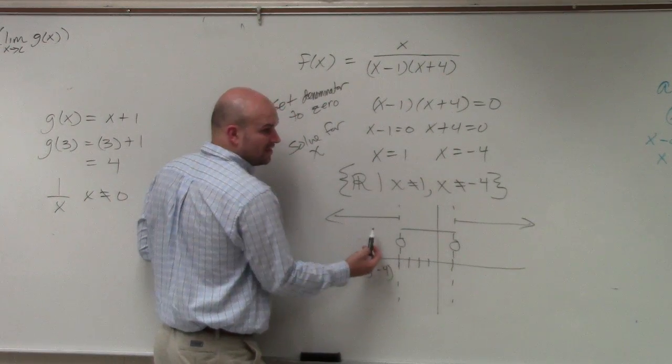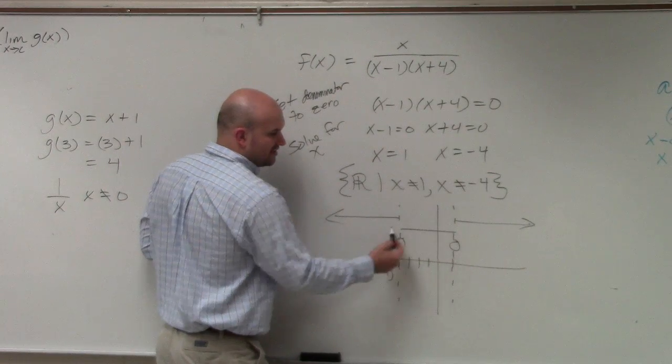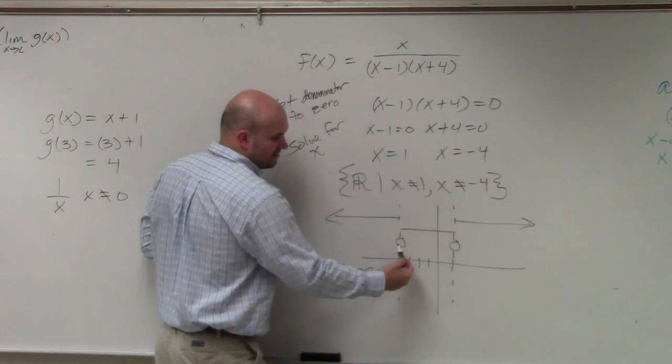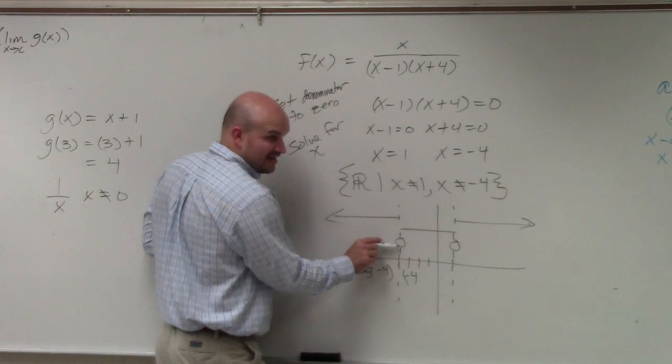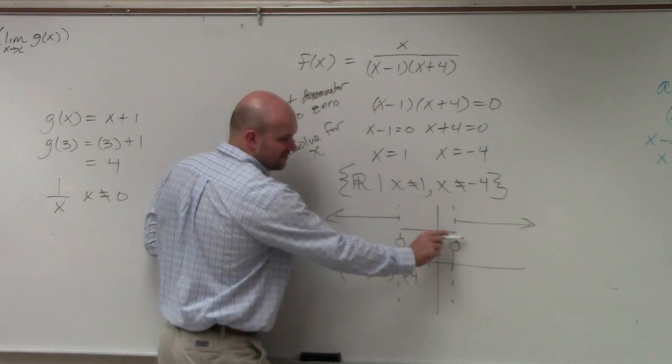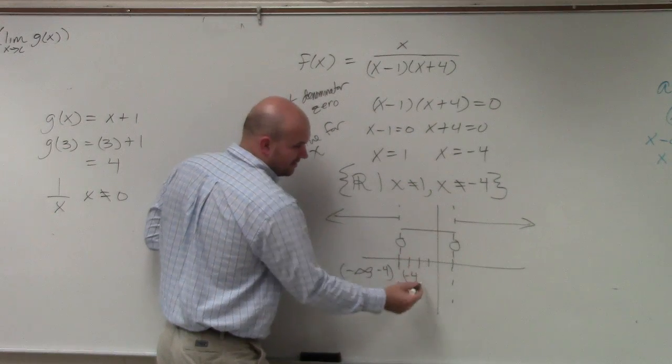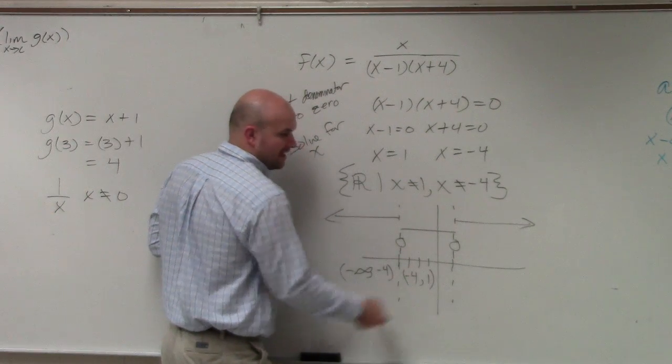Then let's write what are all the values in between here. How far left am I going in this section? Negative 4. I'm only going to negative 4. And then how far to the right am I going? Positive 1.